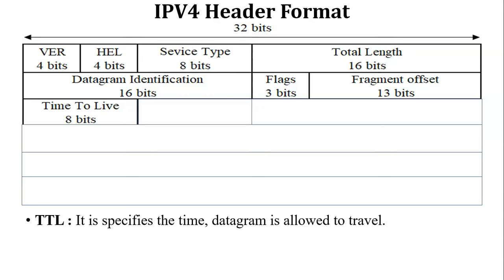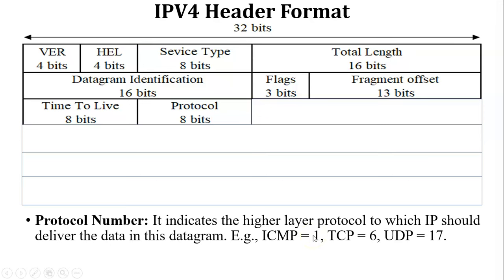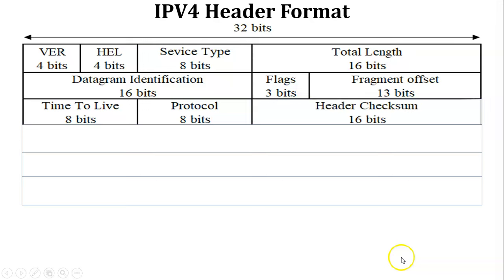The next field is Protocol, which contains 8 bits of data. The purpose of the Protocol field is to indicate which higher-layer protocol is used with IP. For example, protocol number 1 means ICMP is used with IP; protocol number 6 means TCP is used with IPv4; and protocol number 17 means UDP is used with IPv4.